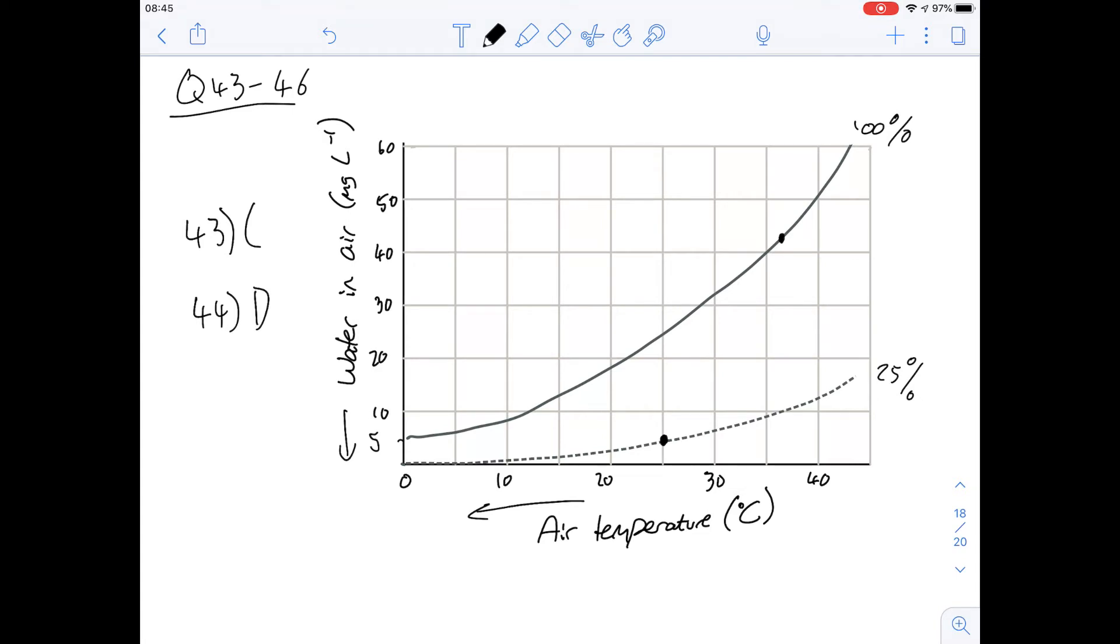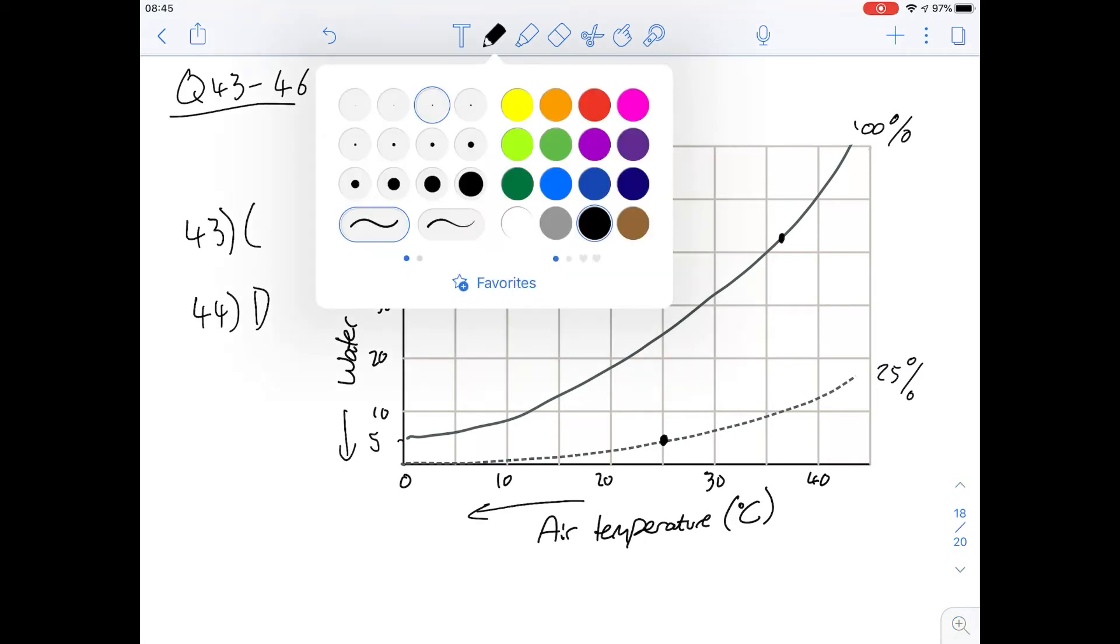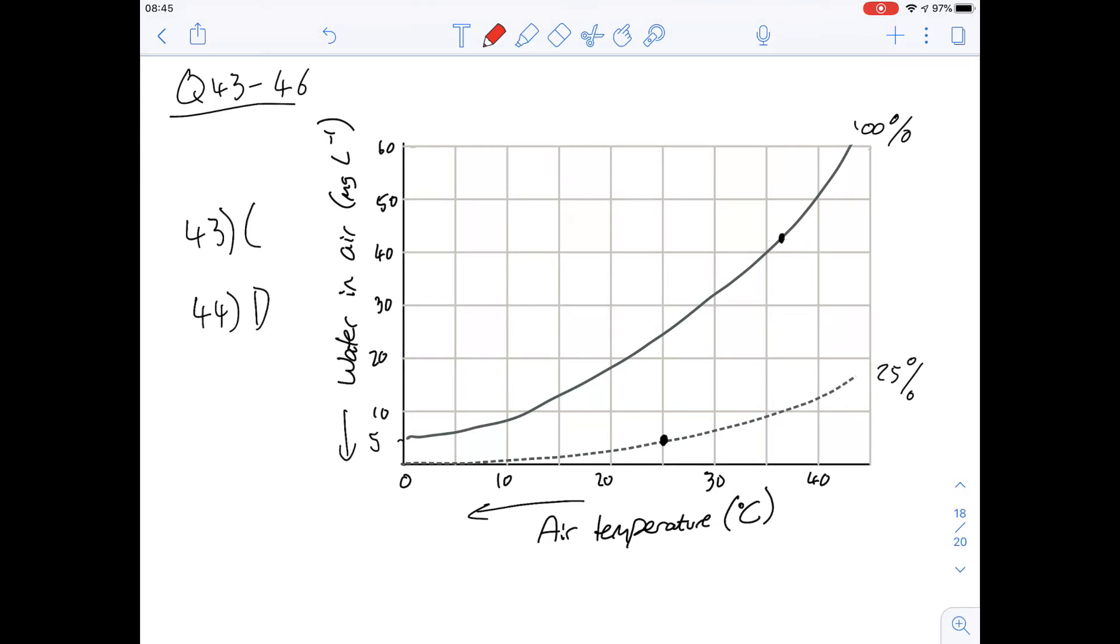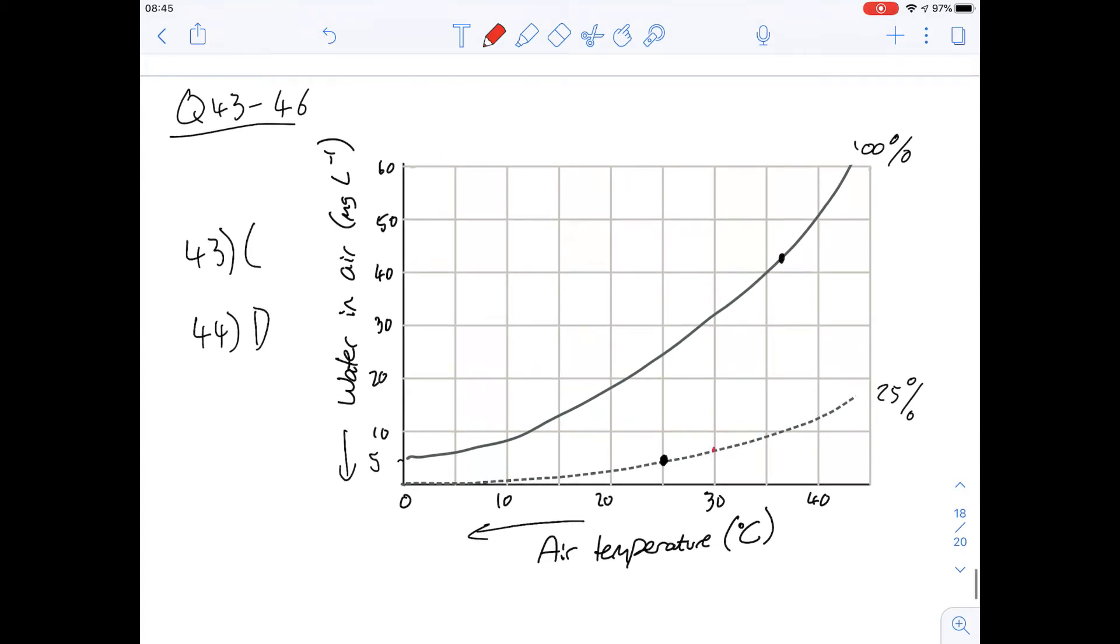Question 45 says consider a kangaroo rat inhaling air of 30 degrees C with 25% relative humidity so let's put on the dots as we go along here. So it's 30 degrees C, 25% relative humidity so that is here. And it's exhaling saturated air at 27 degrees.